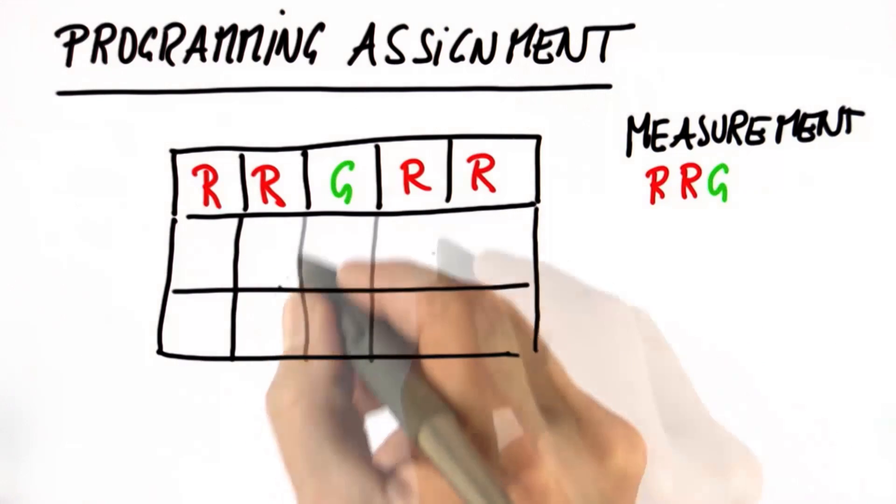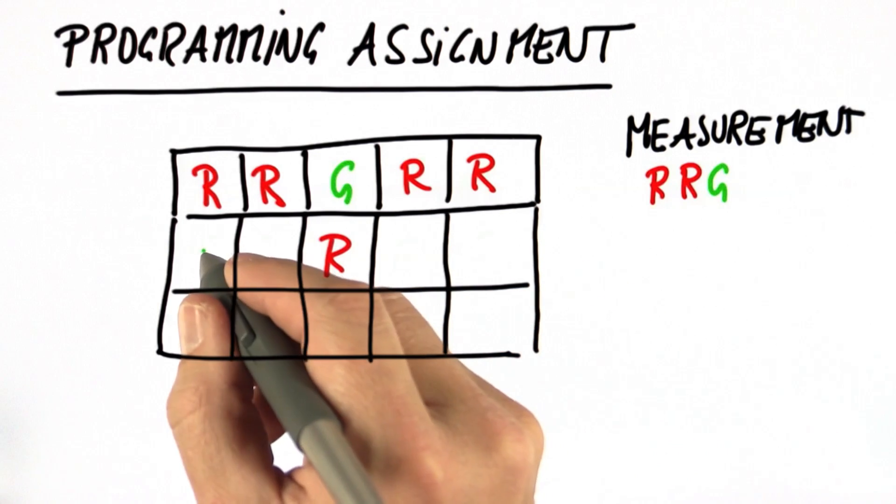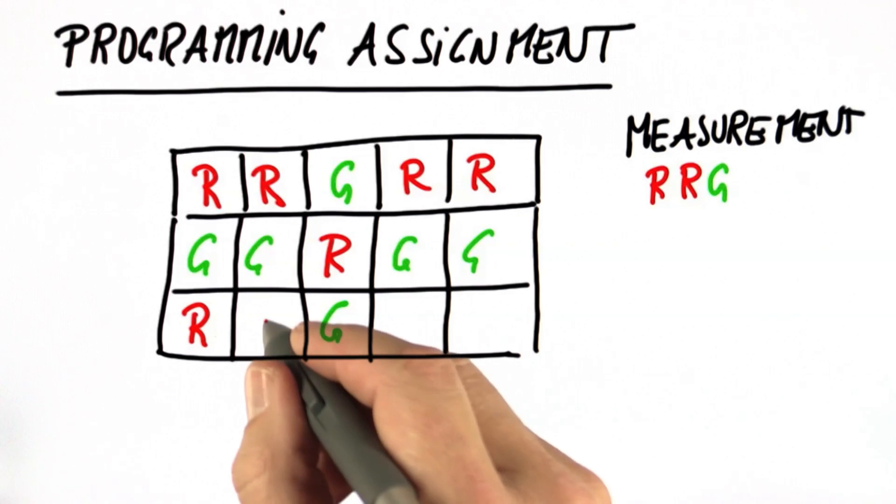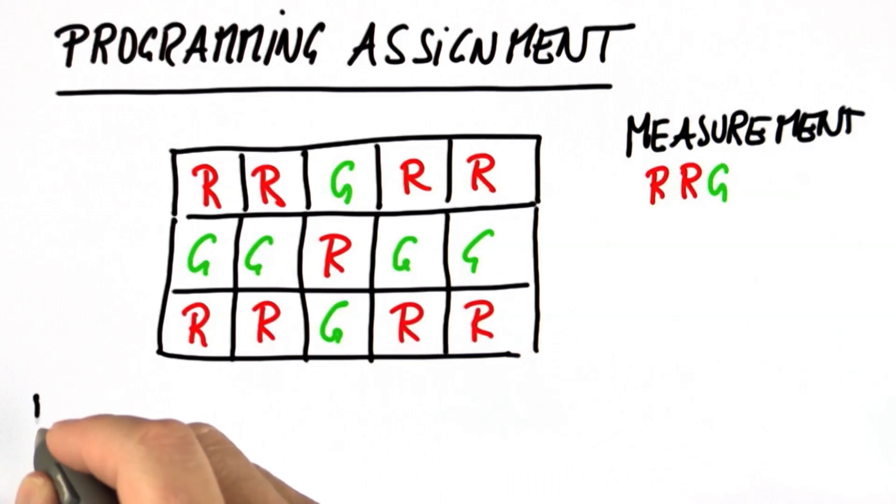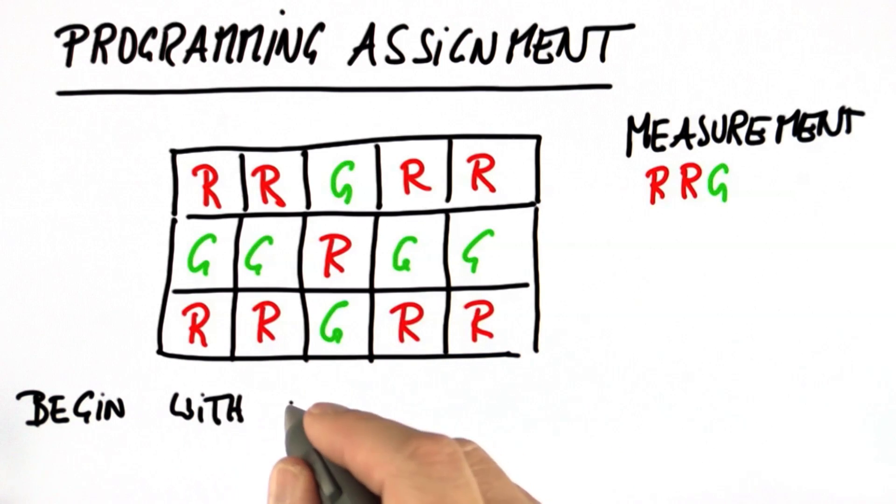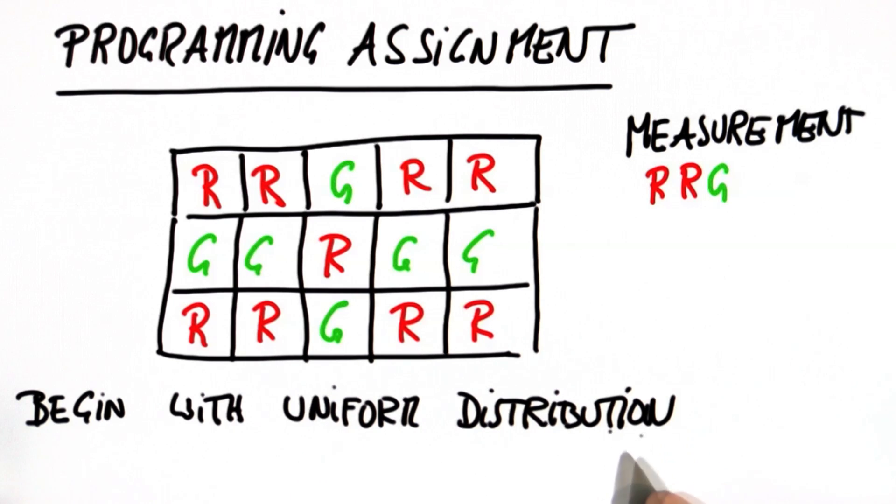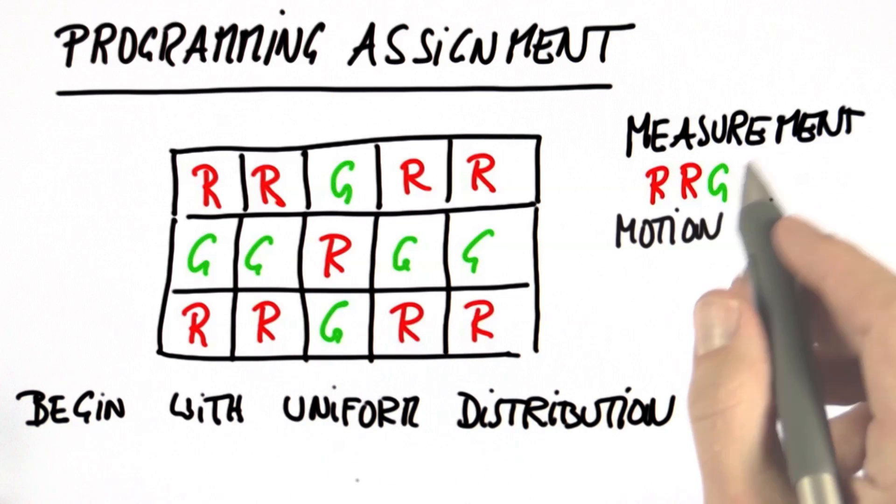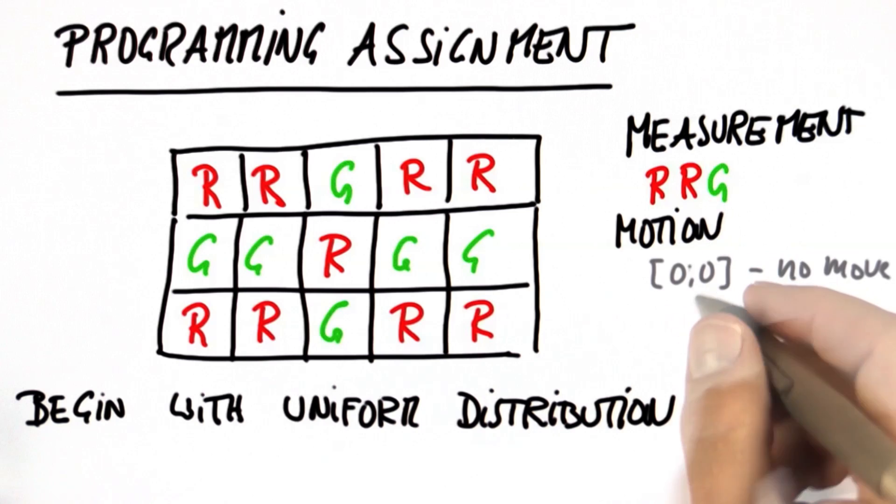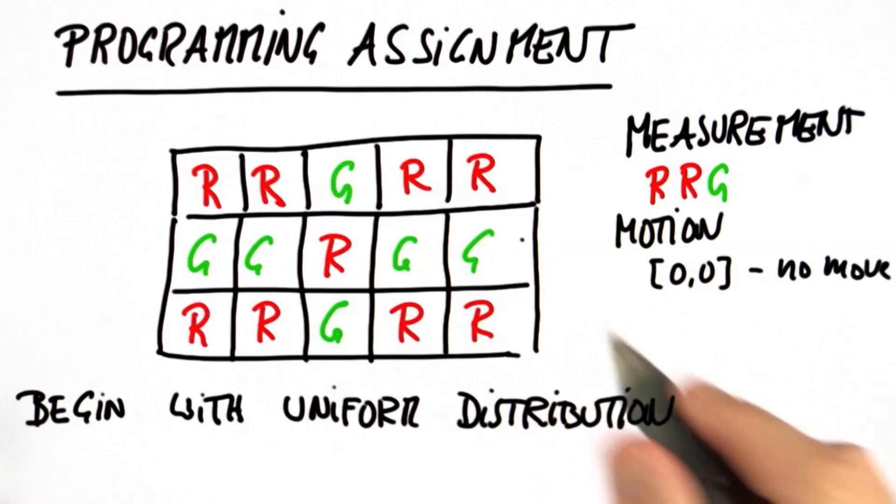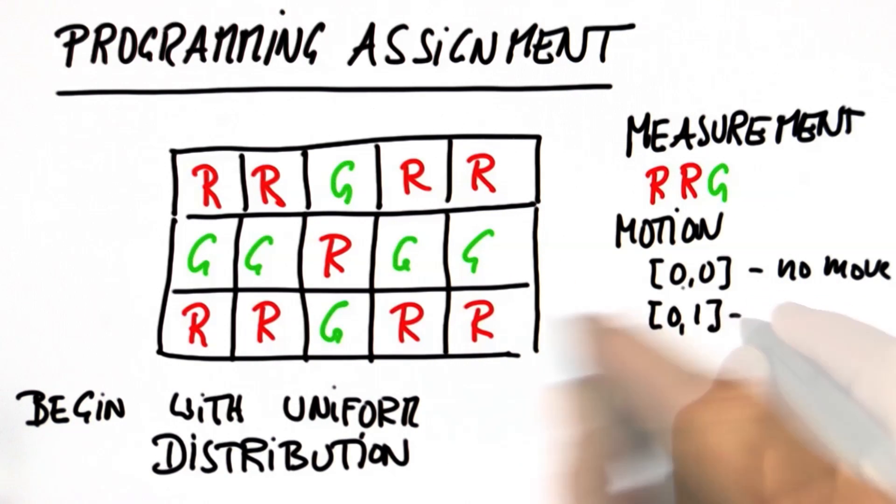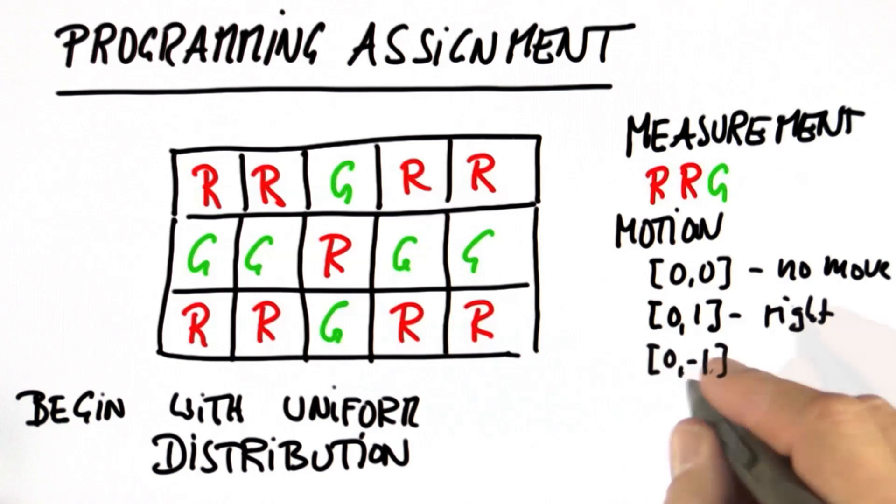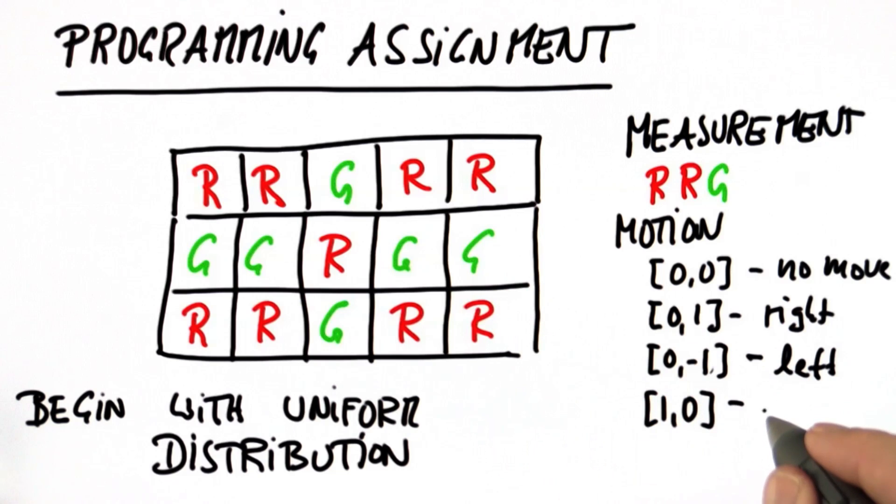In this assignment, I want you to do the same for 2D worlds of arbitrary dimension. Just as before, begin with a uniform distribution, as we always do in global localization. And then we have a number of motion commands. 0,0 is no move. 0,1 means you move to the right. 0,-1 means move left. 1,0 makes you move down, not up. And -1,0 makes you move up.